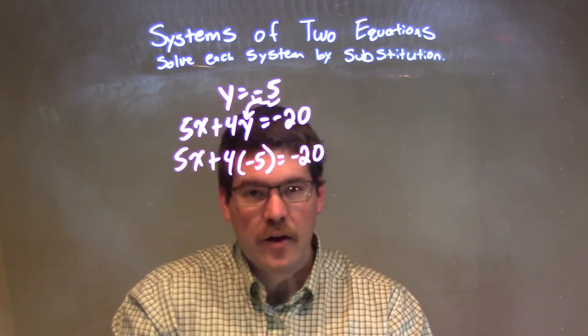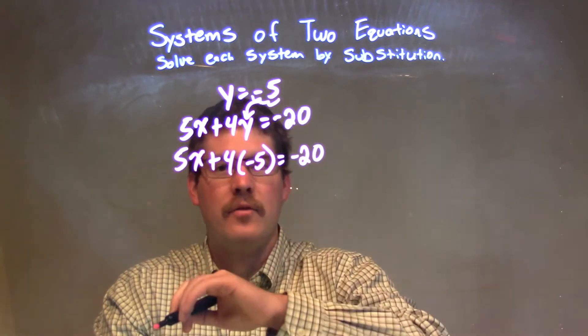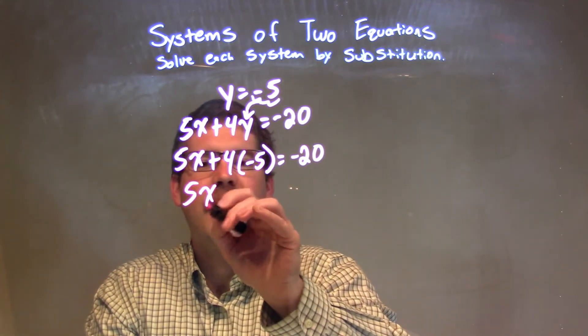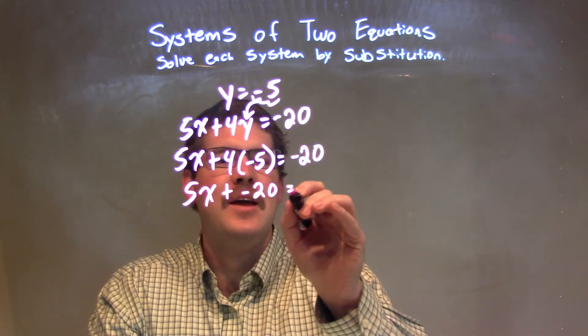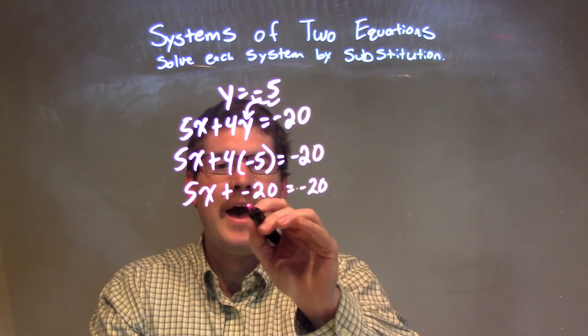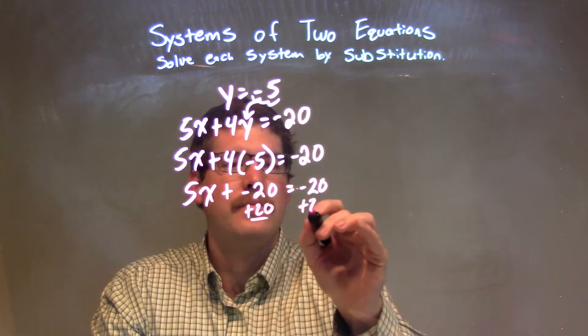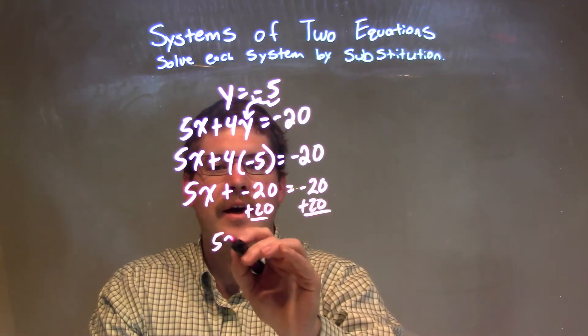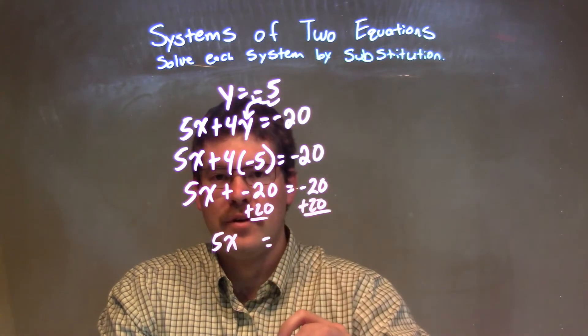Now, I'm just trying to get x by itself. 4 times negative 5 is negative 20. 5x plus negative 20 equals negative 20. I'm going to add 20 to both sides, leaving me with 5x equals negative 20 plus 20, which is 0.